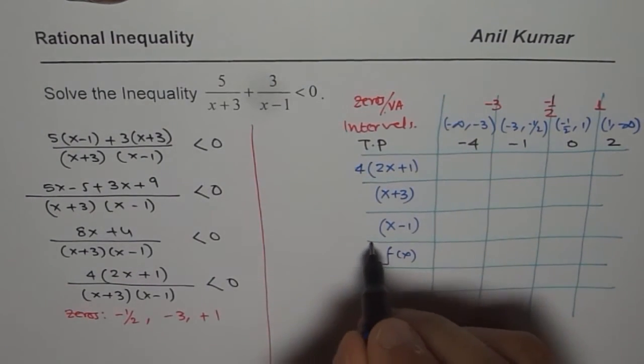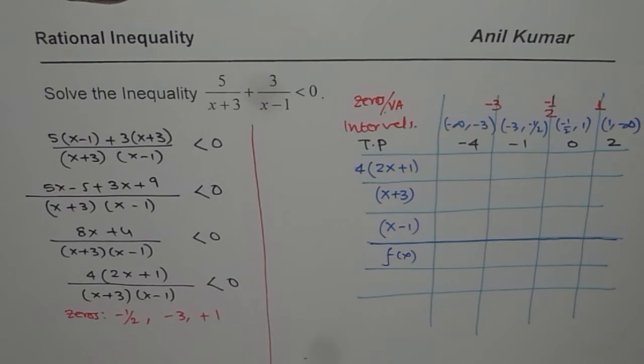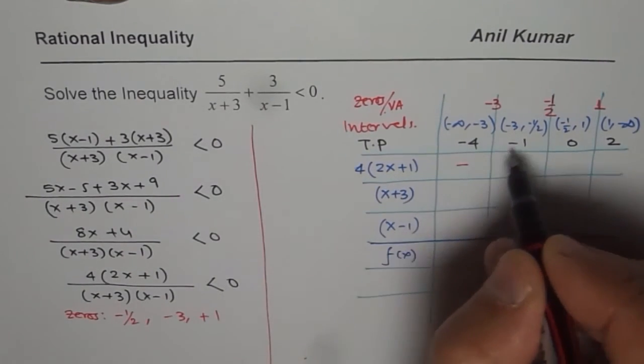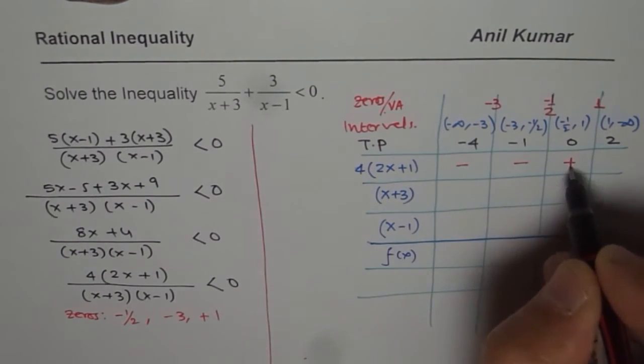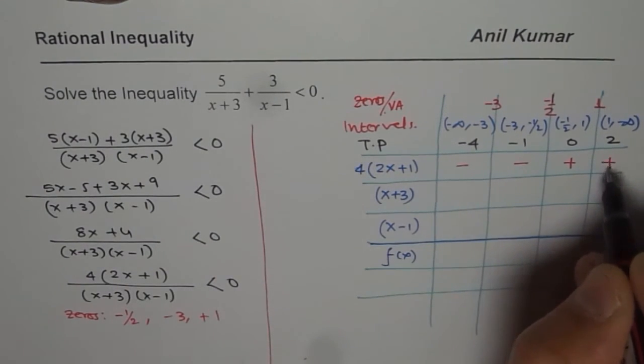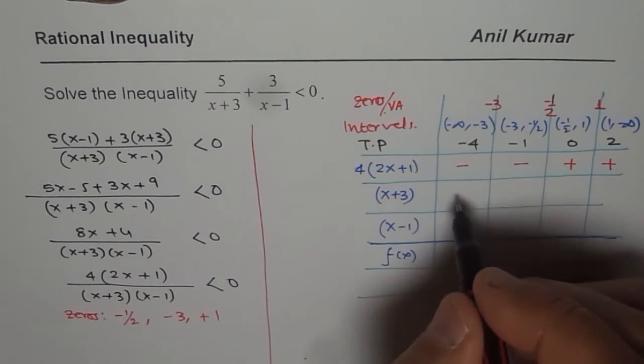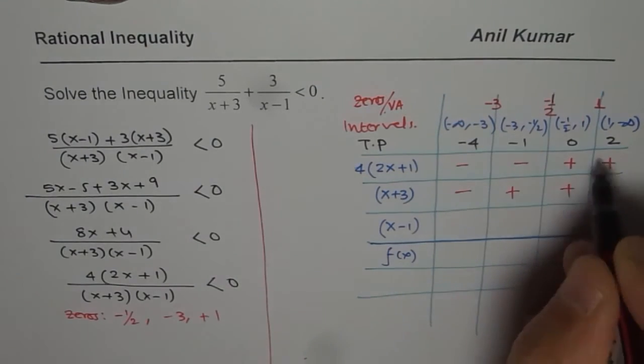We will analyze the function by multiplying the factors and then see whether they are positive or negative. If I substitute minus 4 here, then this becomes negative. Minus 1, it becomes negative, 0 will make it positive, 2 will make it positive. If I substitute in this expression minus 4, it is going to be negative. Minus 1 will result in positive. So these values will result in positive.